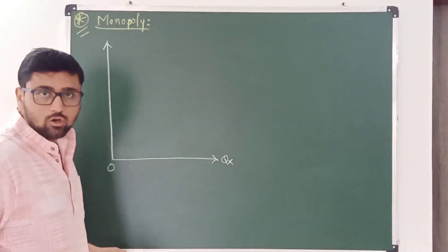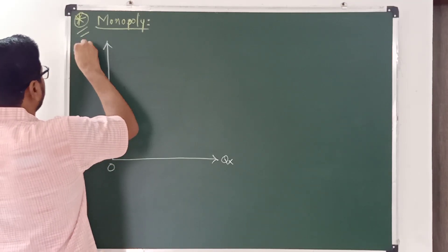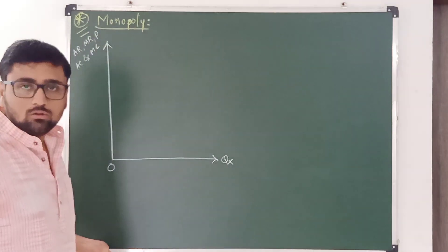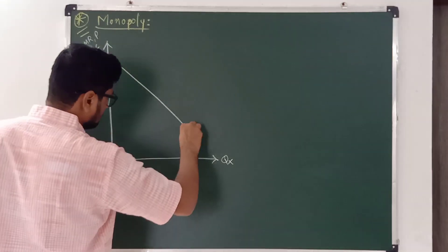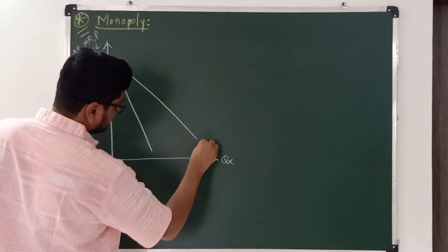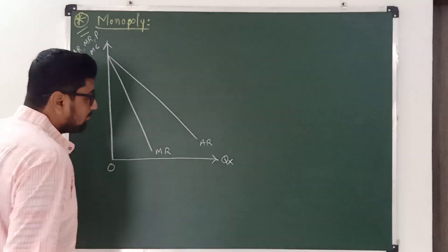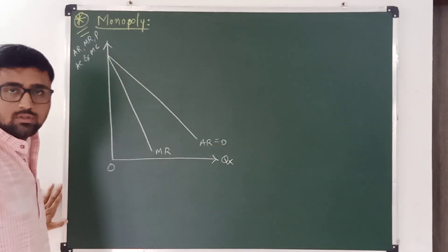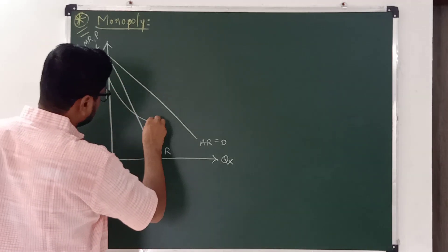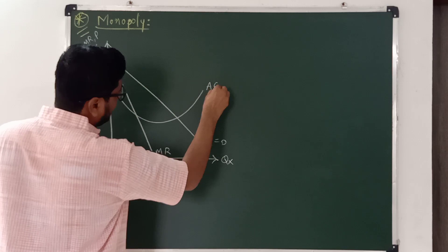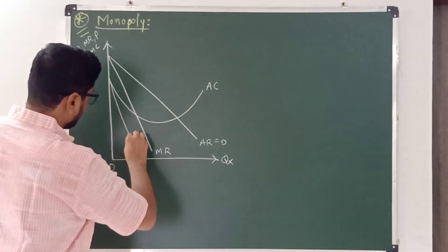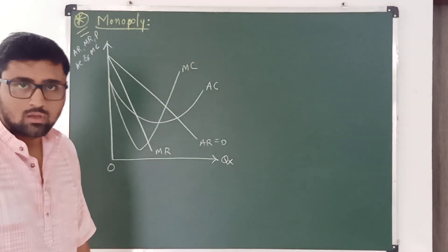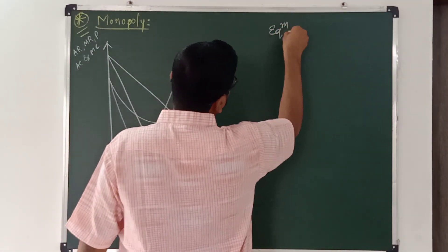Quantity is measured along the x-axis, and average revenue, marginal revenue, price, average cost, and marginal cost are measured along the y-axis. This is the average revenue curve, this is the marginal revenue curve — the average revenue curve is also the demand curve of a monopolist. This is the average cost curve and this is the marginal cost curve.